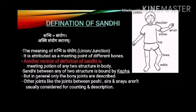Sandhi between any two structures is bound by Kapha. But in general, only the bony joints are described. Other joints like the joints between Peshi, Sira, and Snayu are not usually considered for the counting and descriptions.